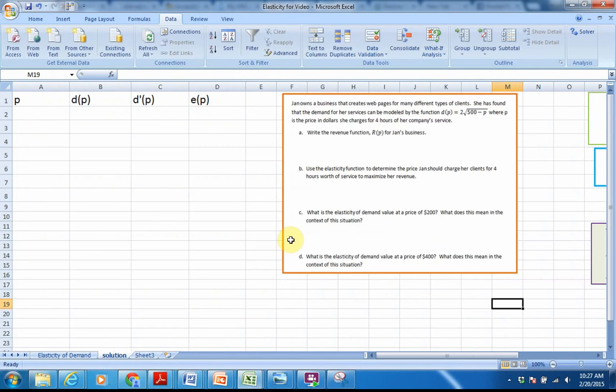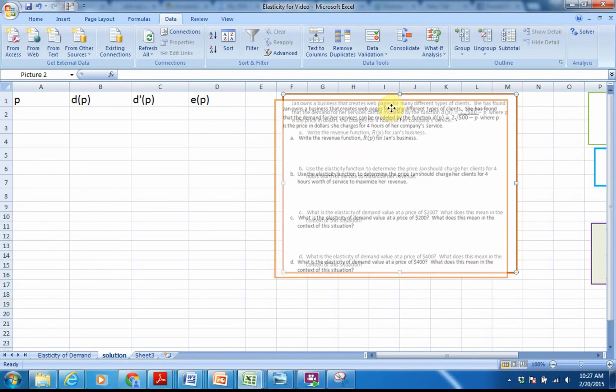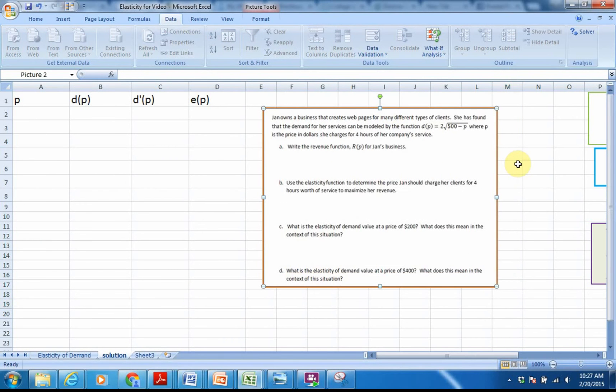But let's go ahead now and look at how we would do this in Excel. So here's my problem again. We've already talked about the revenue function, and really, that's not needed so much when we start talking about elasticity. It says use the elasticity function to determine the price Jan should charge her clients for four hours worth of service to maximize her revenue. So let's talk about how we go about doing this.